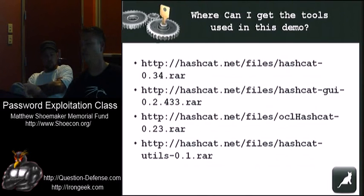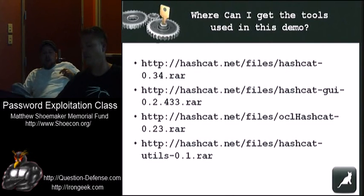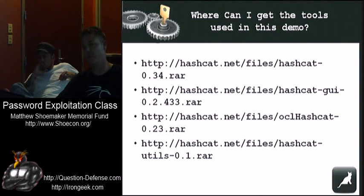If you want to get the tools used in this demo, the first one is Hashcat, which has Windows and Linux binaries. There's also a Hashcat GUI which only works on Windows, and that's what I'll show for Windows. That zip file in the body does have Hashcat in it — you'll need to unzip the raw file, so if you have 7-Zip you should have no problem.